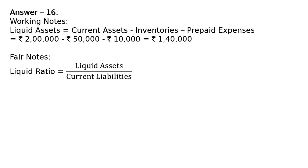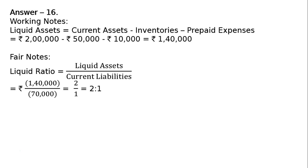Liquid ratio equals liquid assets upon current liabilities. Liquid assets are rupees 1 lakh 40,000 and current liabilities are rupees 70,000, giving 2 upon 1, which equals 2:1.